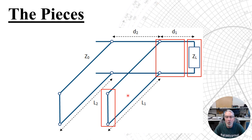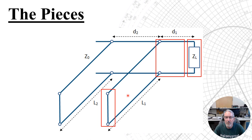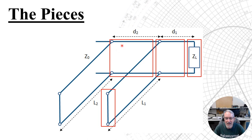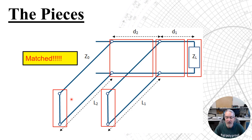The overall goal is to have a match at the location of the second stub once the second stub is added. That means we'll be on the matching circle at the second stub. In order to move to the matching circle, we move the impedance along the transmission line toward the generator from the first stub to the second stub by this distance d2. That places the impedance on the matching circle. The last step is to determine the characteristics of the second stub that will then place us on the matching point, and we have our match.